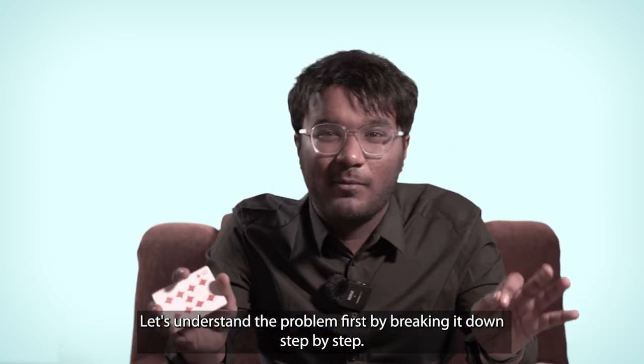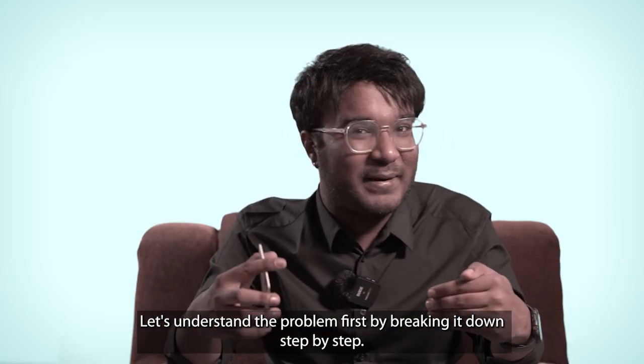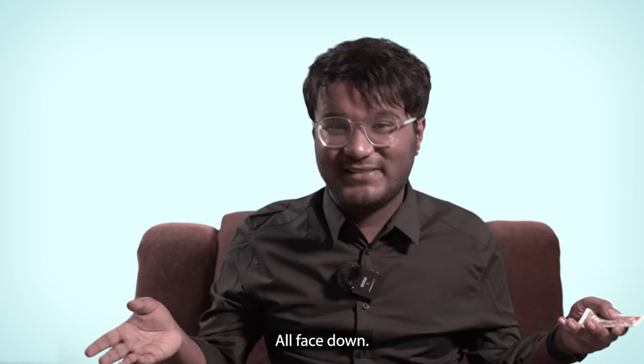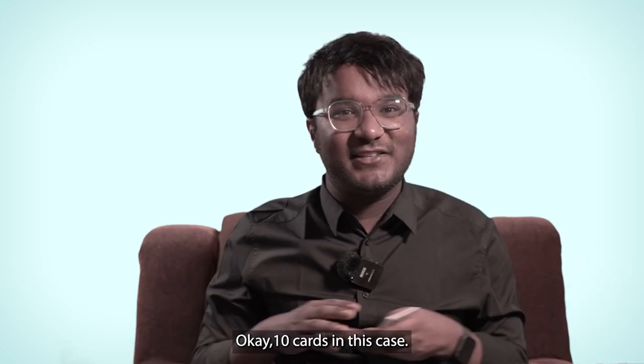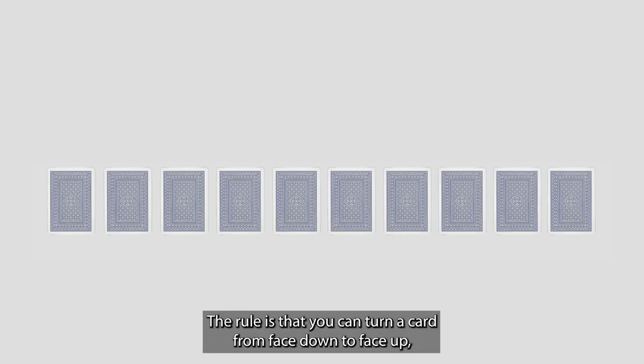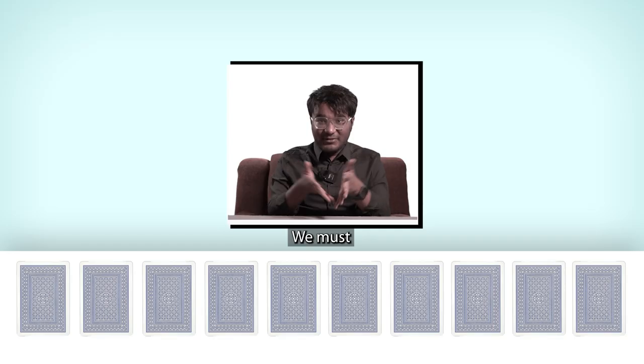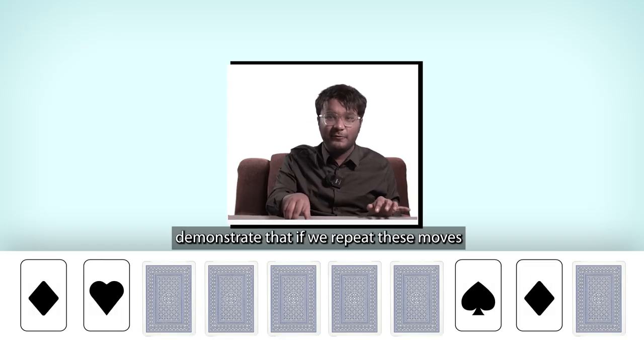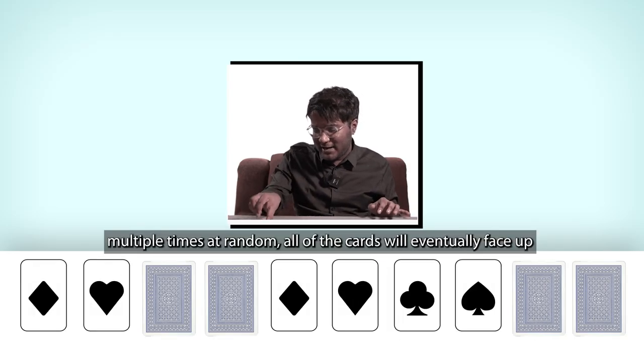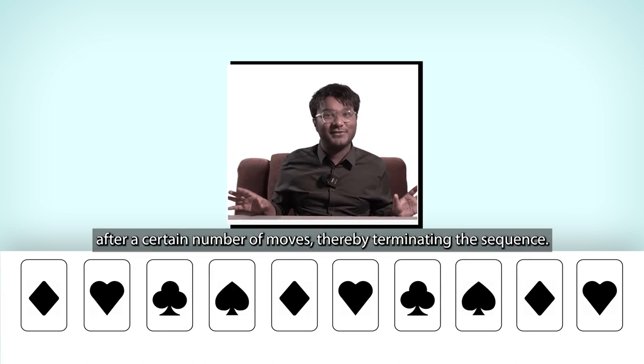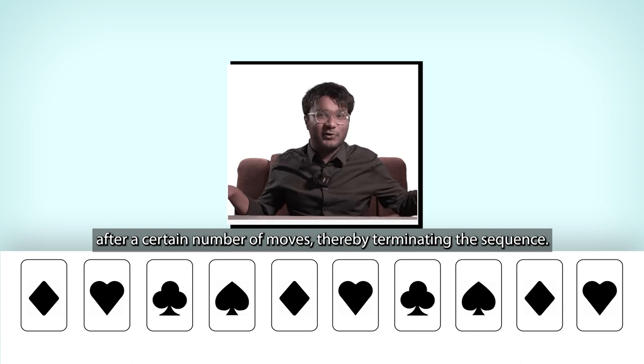Let's understand the problem first by breaking it down step by step. The premise is that there are 20 cards in a row, all face down. Okay, 10 cards in this case. The rule is that you can turn a card from face down to face up, but you must also turn the card immediately next to the right. We must demonstrate that if we repeat these moves multiple times at random, all of the cards will eventually face up after a certain number of moves, thereby terminating the sequence.